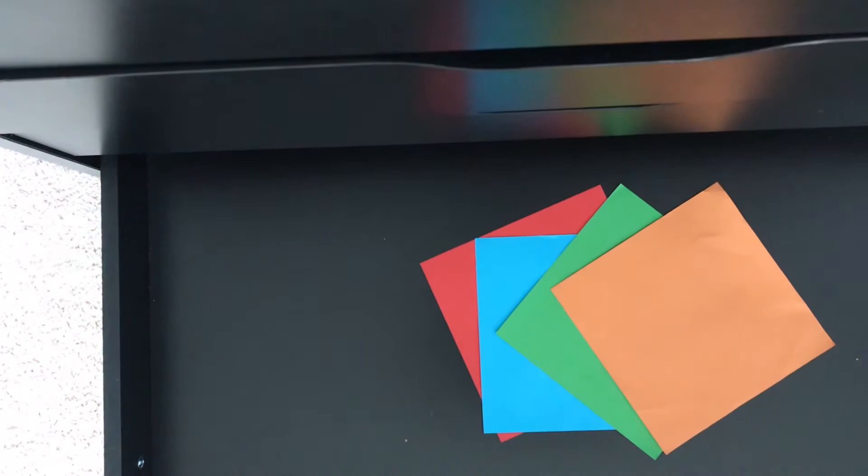Okay, so what you're going to be needing for this double ninja star is four pieces of square paper. They don't have to be origami, the color doesn't matter, and the size doesn't matter. But if you pick one with one size, make sure that all four are the same size.